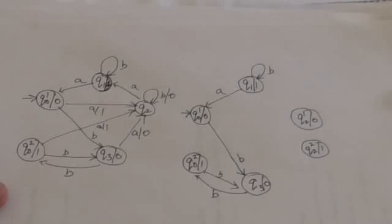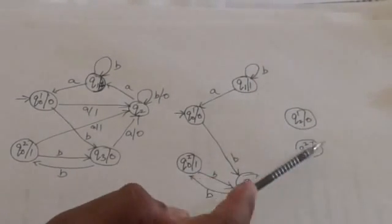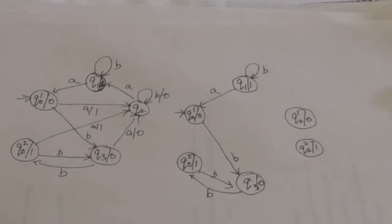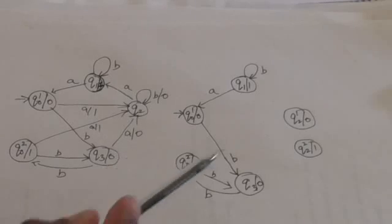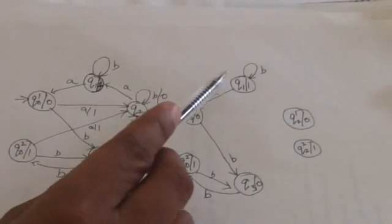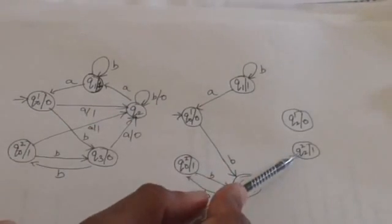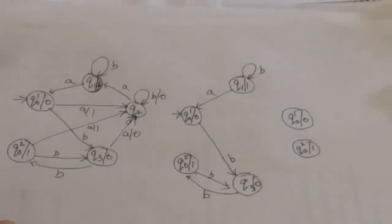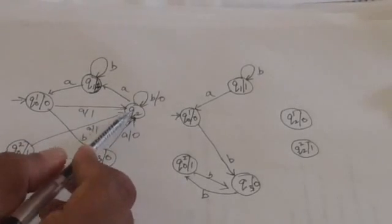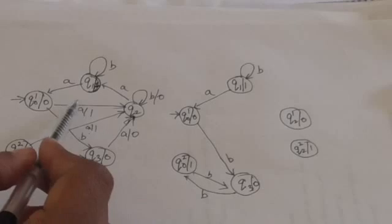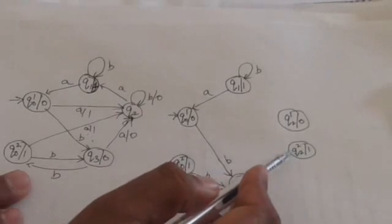We make two versions of state Q2: one associated with output symbol 0 and the other with output symbol 1. Incoming edges labeled by output symbol 0 will fall on the first Q2 version, and those labeled by output symbol 1 will fall on the second Q2 version. The outgoing edges will remain as they are. These two incoming edges of state Q2 are labeled by output symbol 1, so these edges will fall on the Q2 version associated with output symbol 1.